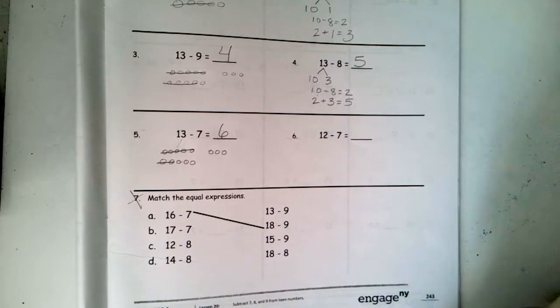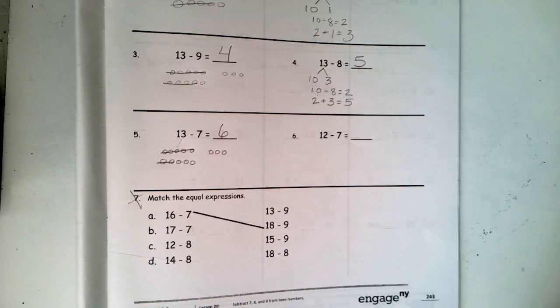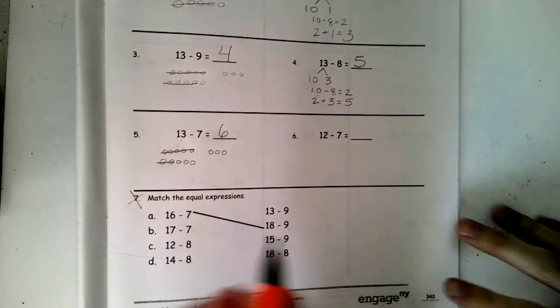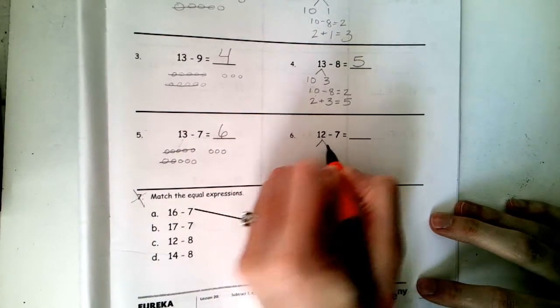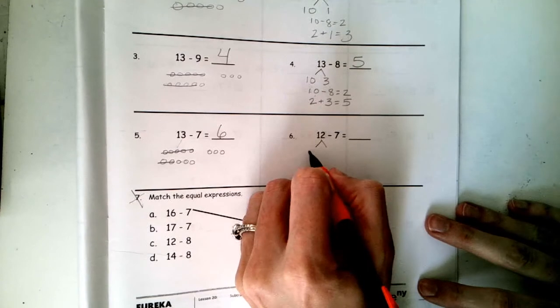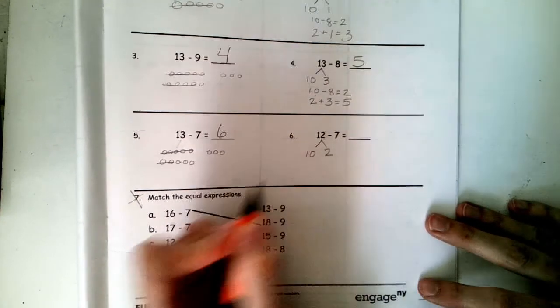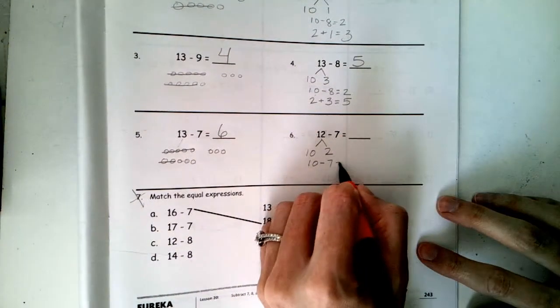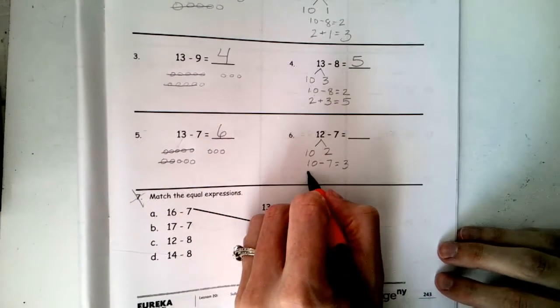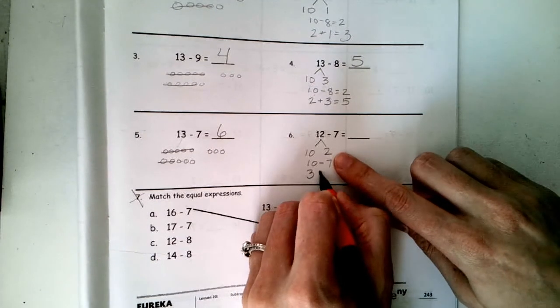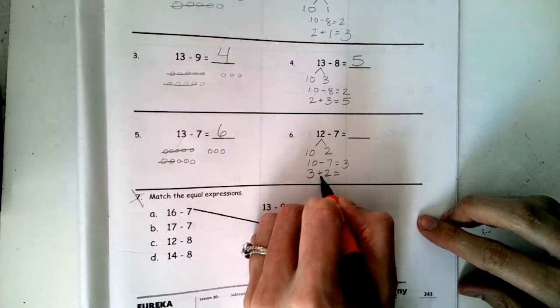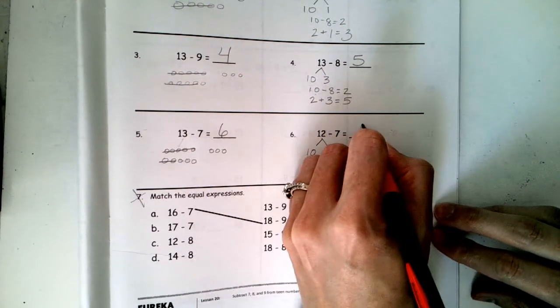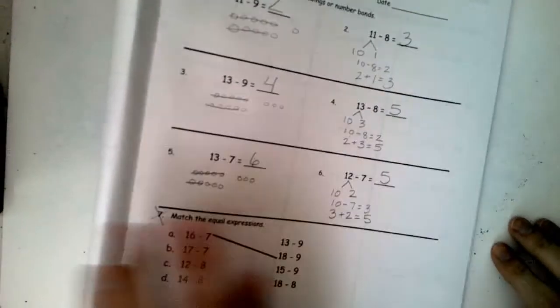All right, one more. Go ahead and pause me. Finish number 6, then push play so we can go over the answer. Great job. Are you ready to review? I'm going to show the number bond. You just check your answer using whatever strategy you used. 12 is made up of 10 and 2 more. If I have friendly 10 and I take away 7, I get 3 left. I take my 3, I see what's left in my number bond, which is the number 2, and I add it up. 3 plus 2 equals 5. So 12 take away 7 makes 5. Awesome, awesome job.